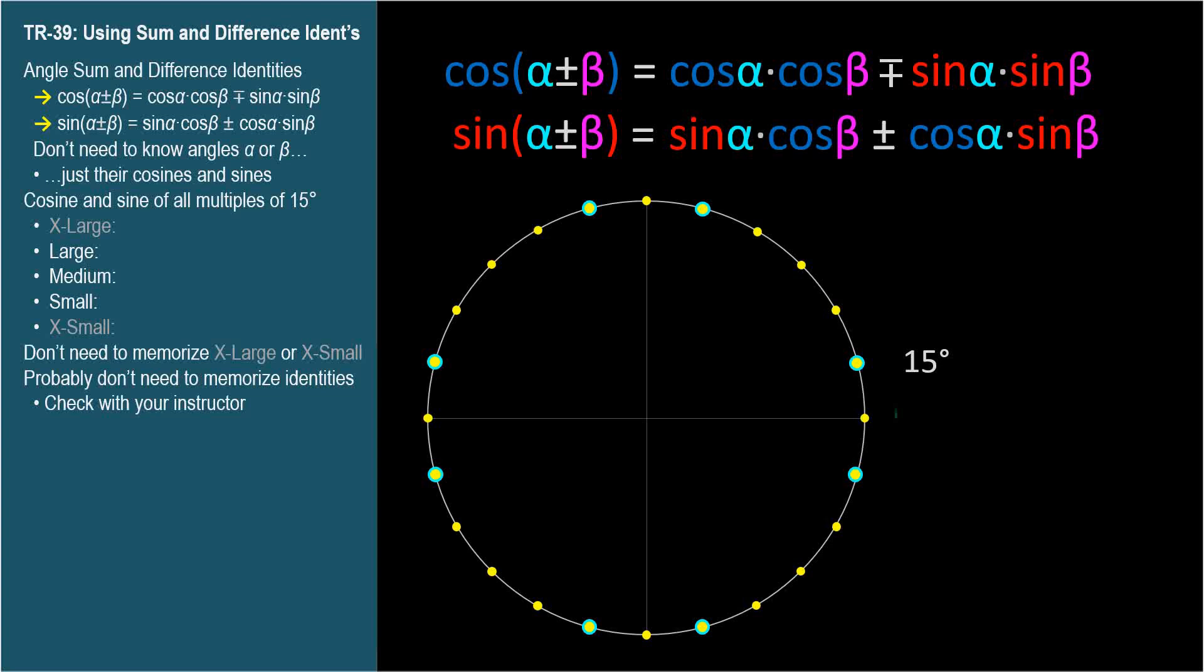We'll consider 15 degrees to be 45 degrees minus 30 degrees, so we can use the angle difference identities with common angles whose sine and cosine we already know. By the way, 15 degrees is the same as π/12 radians, half of π/6.